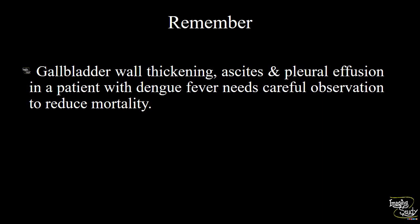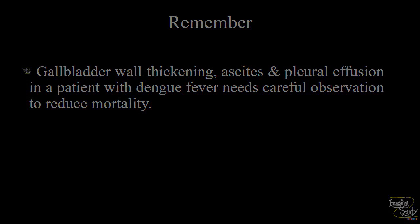The take-home message for this case: if you see gallbladder wall thickening, ascites, and pleural effusion in a patient with dengue fever, careful observation is required. We usually want to keep this patient in a center with an intensive care unit facility, because the patient may deteriorate at any time due to hemorrhagic complications or very low platelet count. Search for these features to reduce mortality in dengue fever cases.